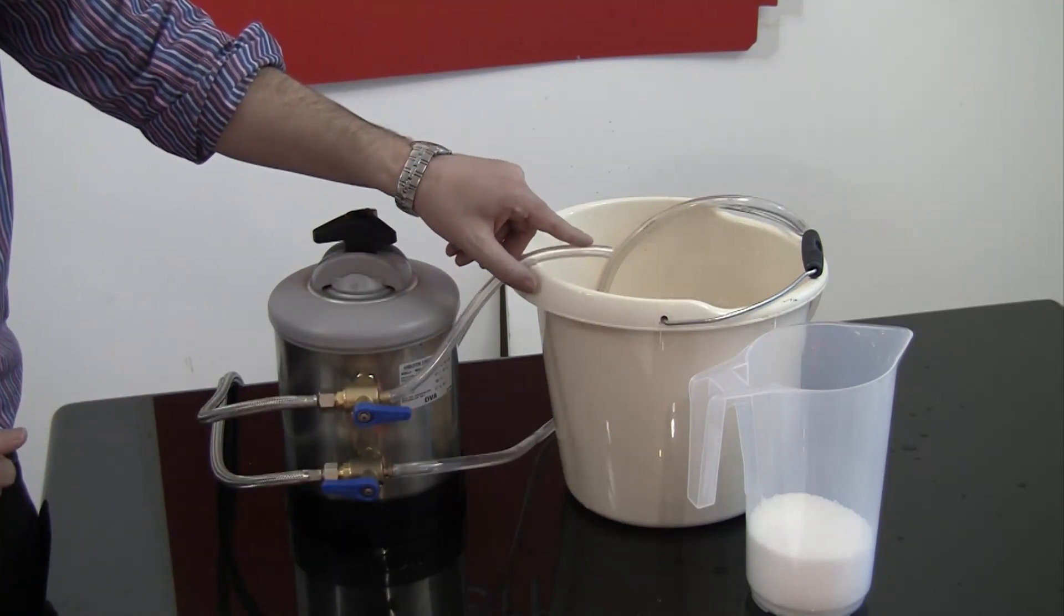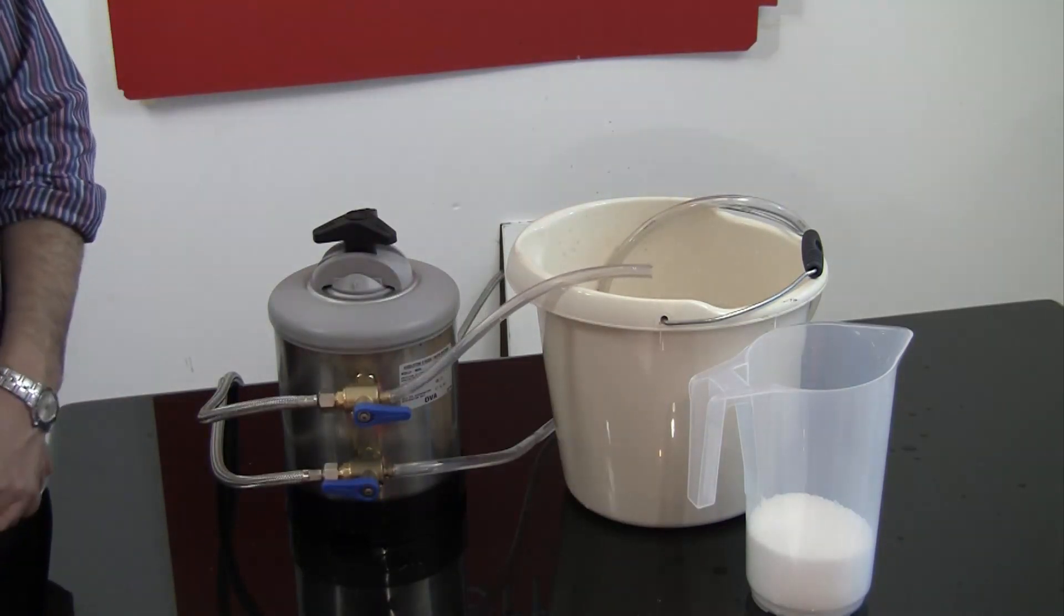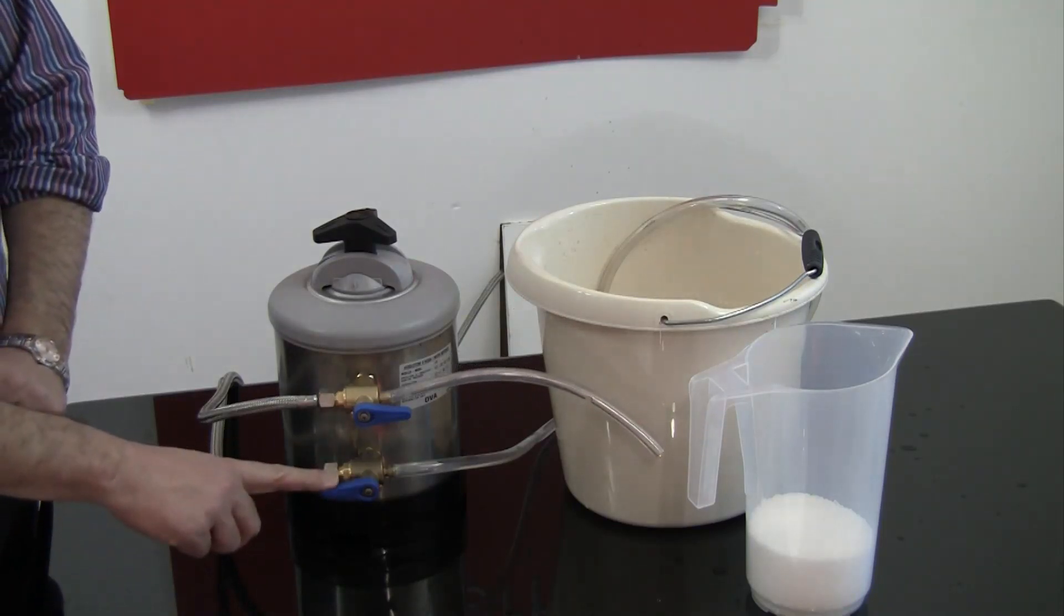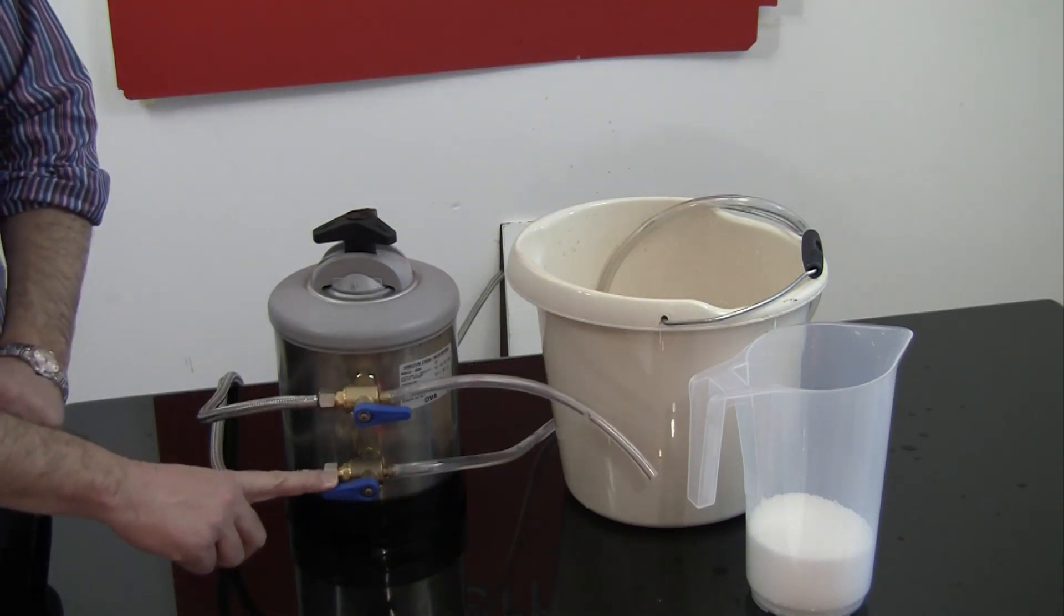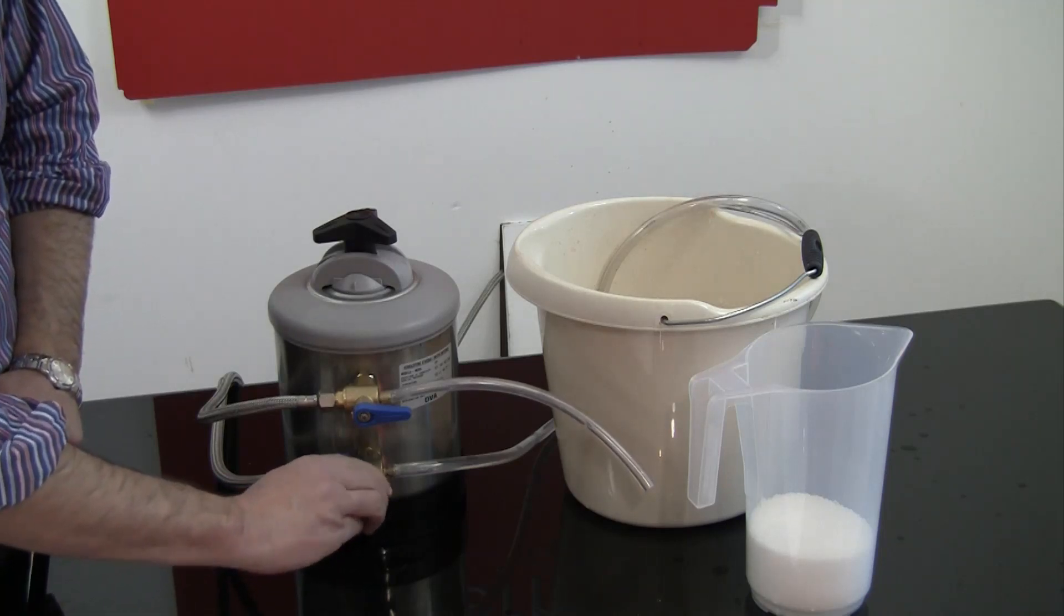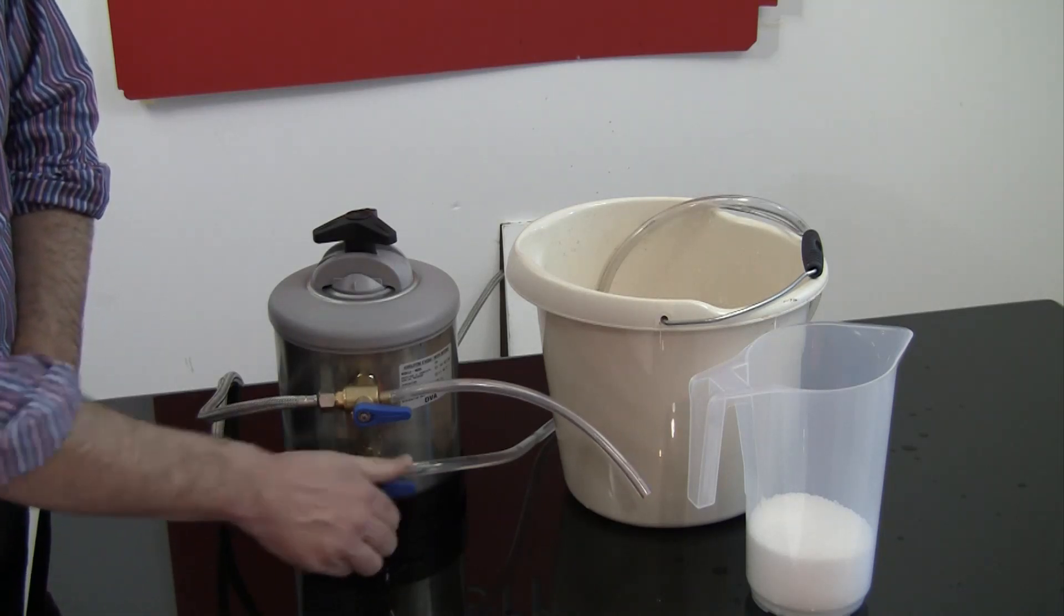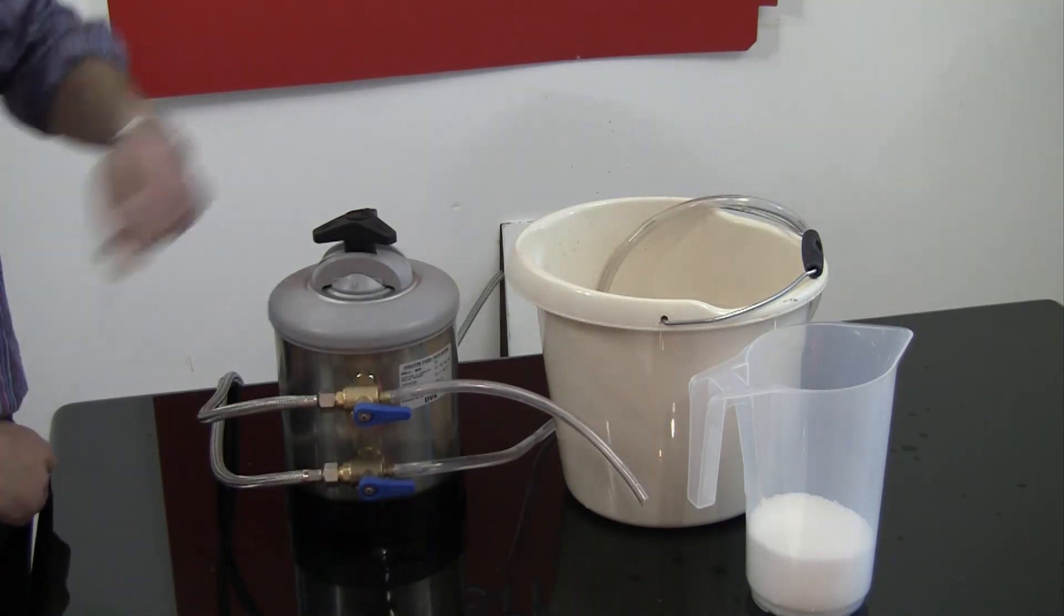Step four is to redirect the outflowing water to the wastewater container. Turn the bottom tap clockwise from the nine o'clock position to the three o'clock position, pointing the tube into the wastewater container.